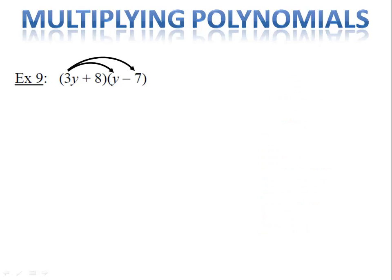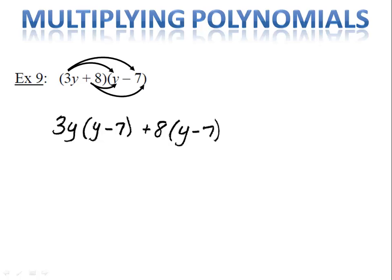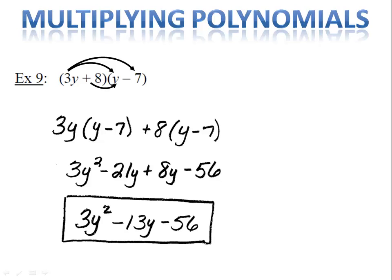When we do the first and the outer terms, we distribute the 3y into y minus 7. When we do the inner and the last terms, we're distributing the 8 into y minus 7. So really we're just using the distributive property two times. When we do that, we end up with 3y squared minus 21y plus 8y minus 56. I can combine my two middle terms — the negative 21y and the 8y — and end up with minus 13y.